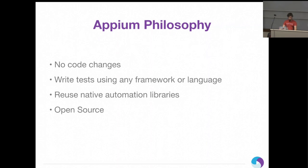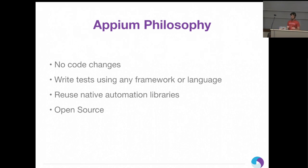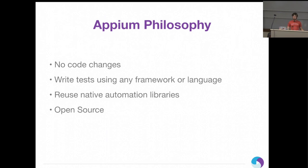The core philosophy guiding us in building Appium: no code changes — what Appium is testing is the exact same app you would upload to the App Store. You don't have to add any code to your project file for testing. The way we do this is by reusing the native automation libraries. Appium doesn't want to build some brand new paradigm; it wraps the native automation libraries that Apple and Google already provide, allowing you to communicate with those tests over HTTP using the JSON wire protocol.